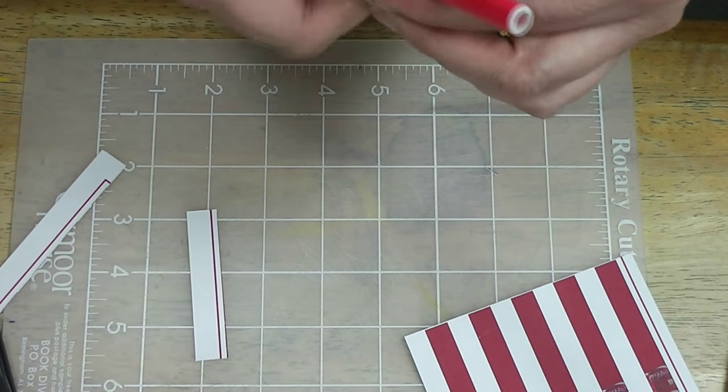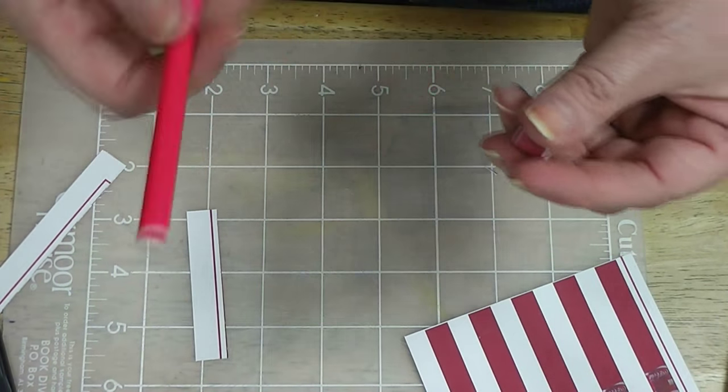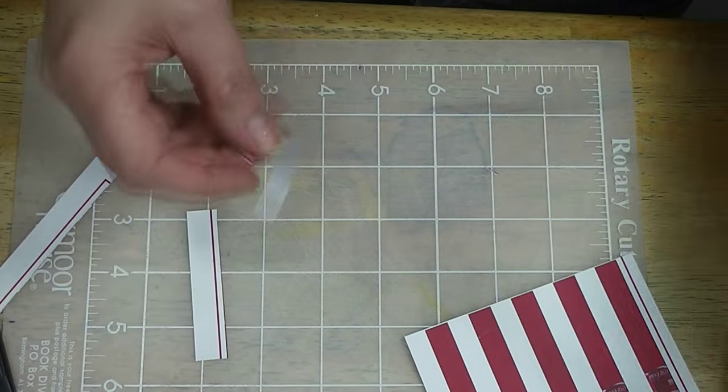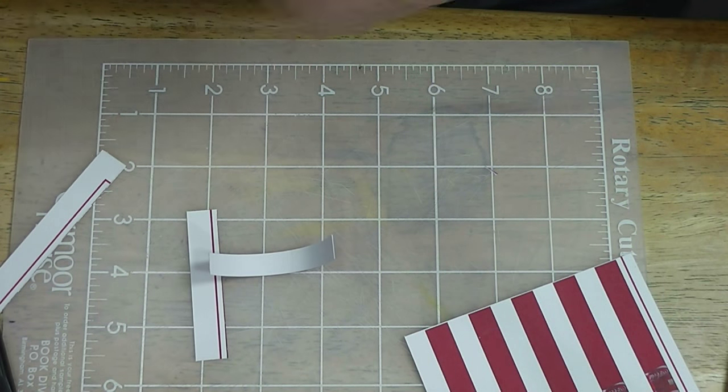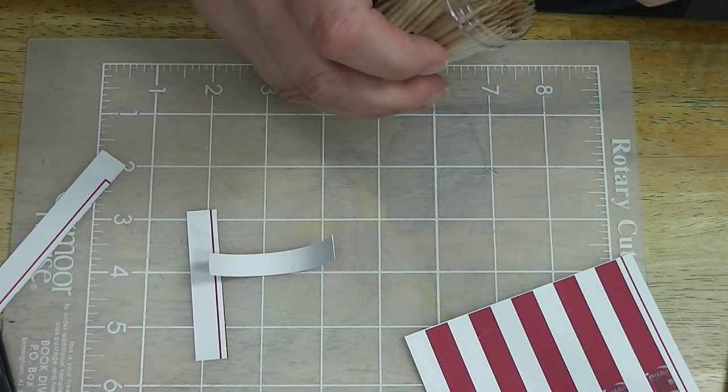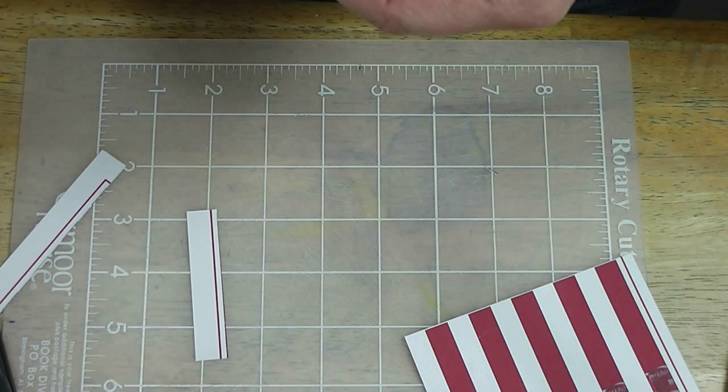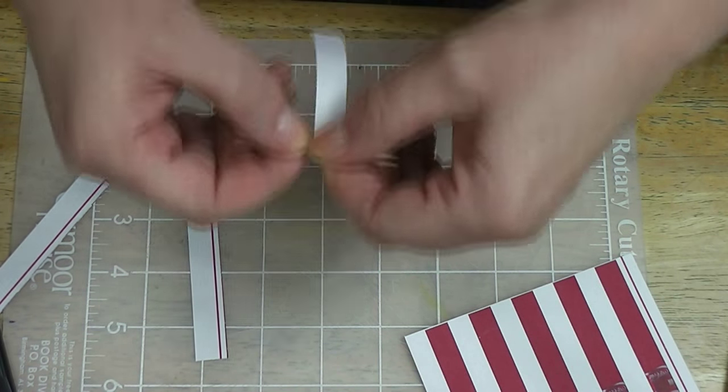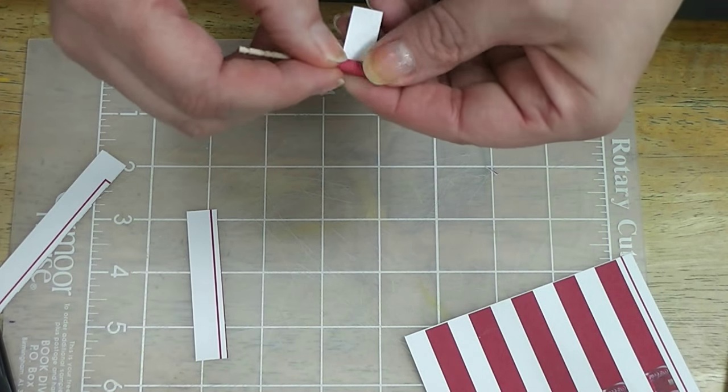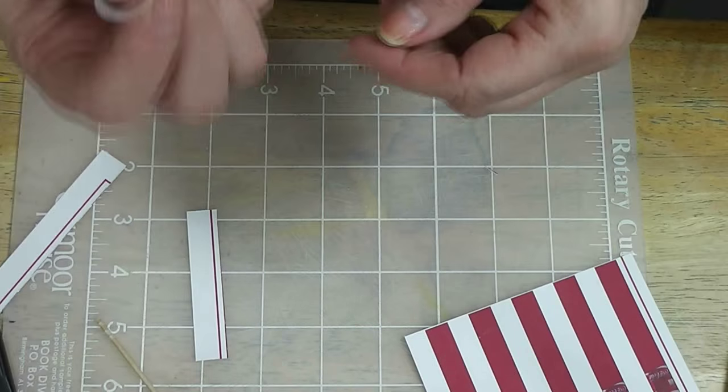What I like to do to start, I like to roll this around something. This happens to be just a marker that was sitting here on my table. Kind of get your paper, and then roll it on something skinnier if it's still feeling like it doesn't want to do what I want it to. Let me get a toothpick, starting with the inside. I like to pre-roll these before I start trying to glue them.